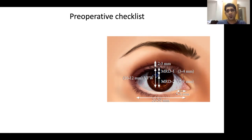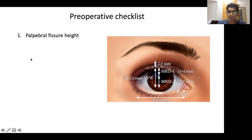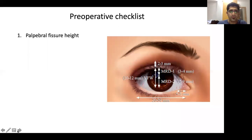When evaluating a ptosis patient, two key decisions must be made: whether to operate, and if so, what measurements are needed. A clinical checklist includes: palpebral fissure height measurement (sit exactly opposite the patient, use a transparent scale, match head positions, have a light source). All measurements require careful positioning and a light reflex. Palpebral fissure height is measured first, followed by margin reflex distance.